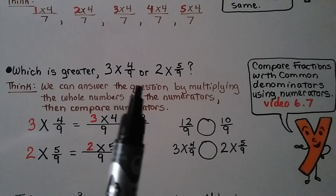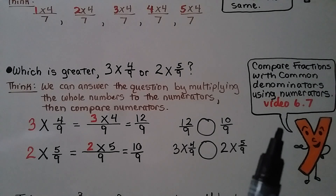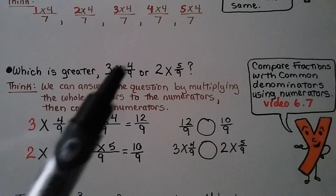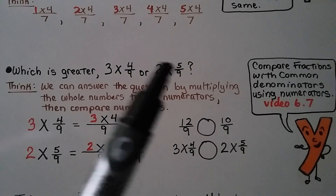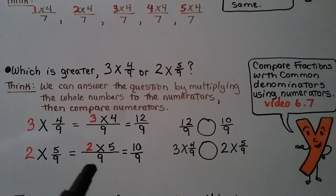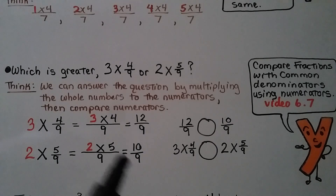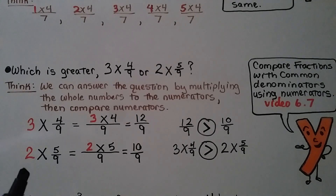Which is greater: 3 times 4/9 or 2 times 5/9? We multiply the whole numbers to the numerators, then compare — fractions with common denominators are compared by their numerators, as learned in video 6.7. Three times 4 is 12, giving 12/9. Two times 5 is 10, giving 10/9. Since 12 is greater than 10, 12/9 is greater than 10/9, so 3 times 4/9 is greater than 2 times 5/9.